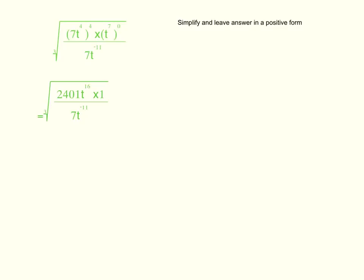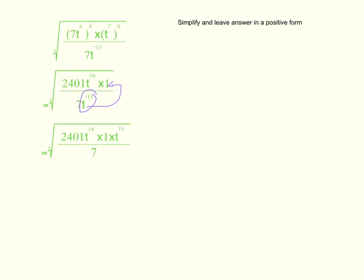Moving back to the question, it asks us to simplify and leave the answer in a positive form. So we have to change t to the power of negative 11 into a positive index. To do that, we just move it to the numerator. After making t to the power of negative 11 a positive index, you should get this answer. Then you have to solve the numerator, and you should get cube root of 2401, t to the power of 27, over 7.